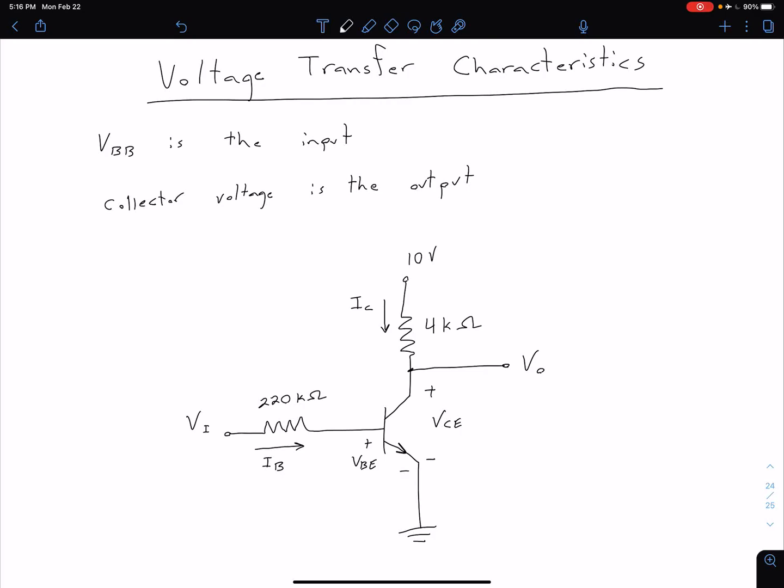In this video we're going to look at voltage transfer characteristics for our circuit. In order to do that we have to have a defined input and output. We've taken the circuit from the previous example and we've now defined our VBB as our input voltage and we've defined the voltage at the collector of our transistor as our output voltage.